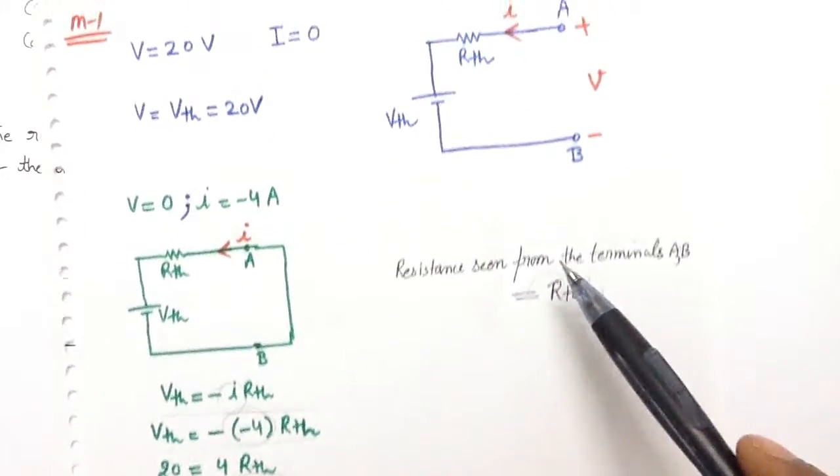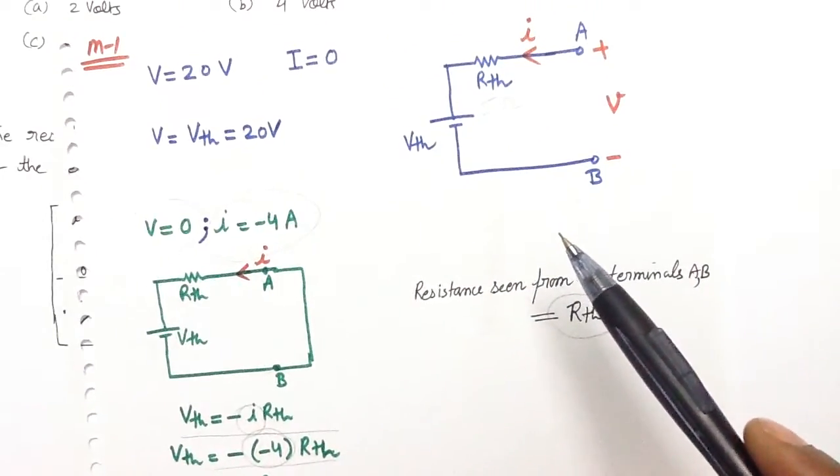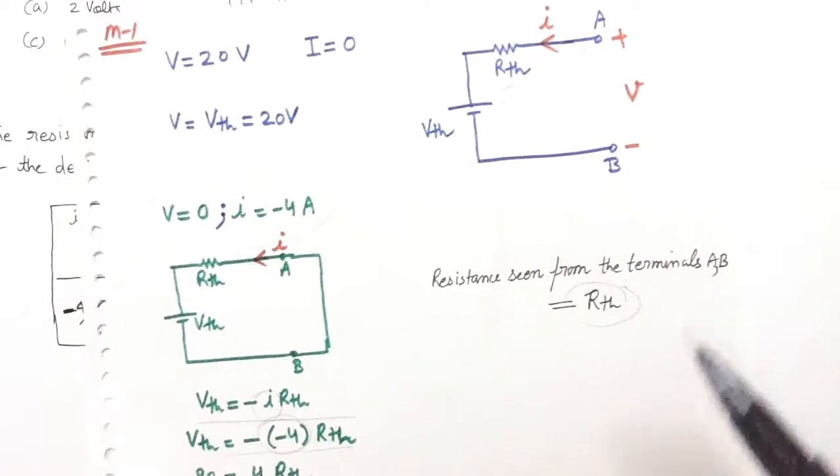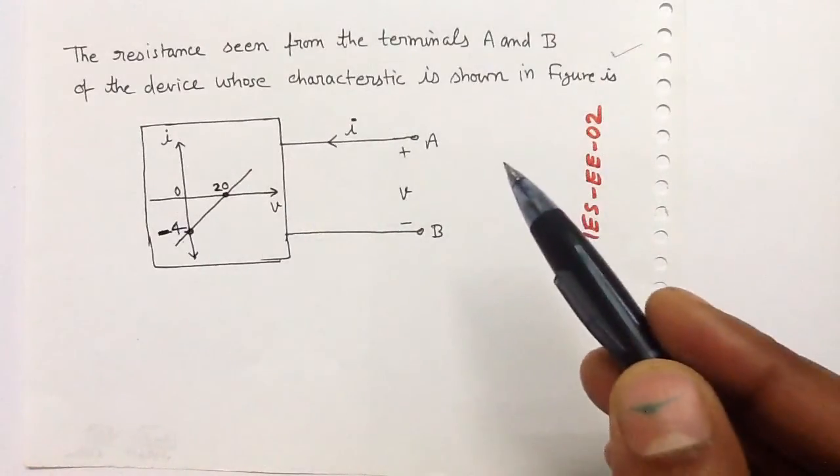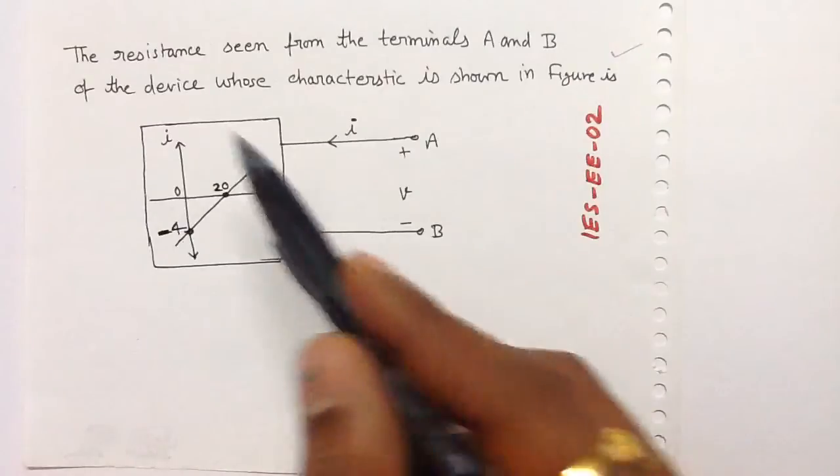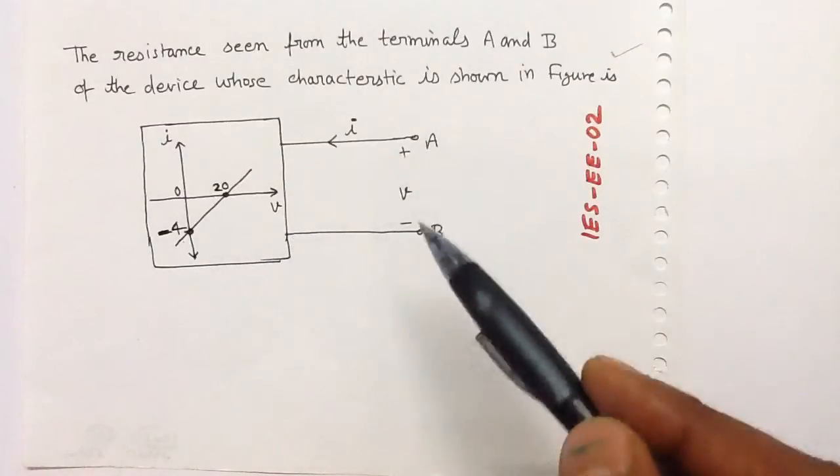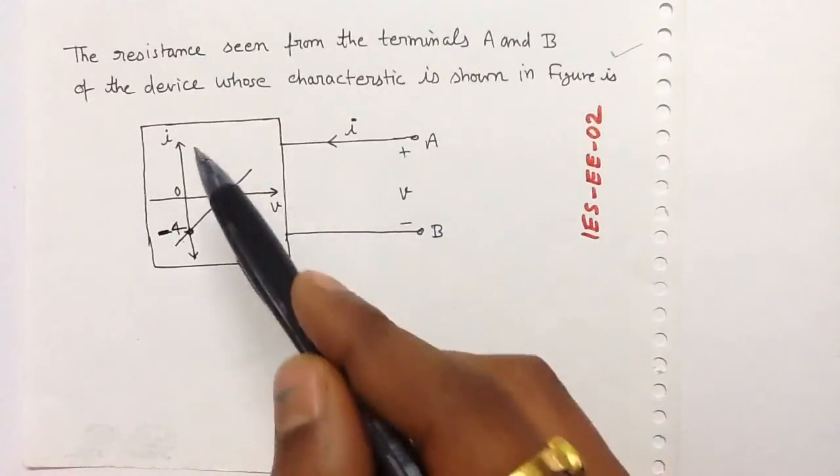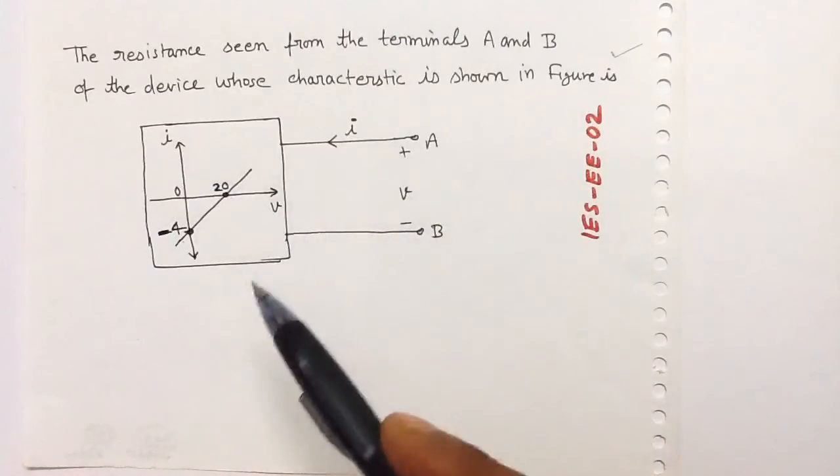So our answer will be 5 ohm. There is another way to solve this question. The device characteristic is given. V is the voltage drop across terminals A and B and I is the current flowing inside the device.